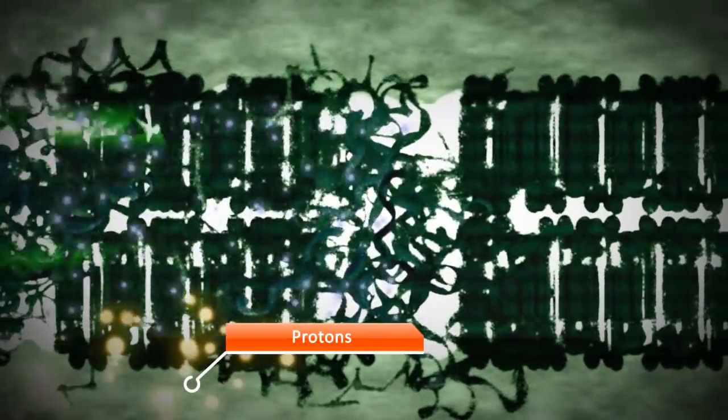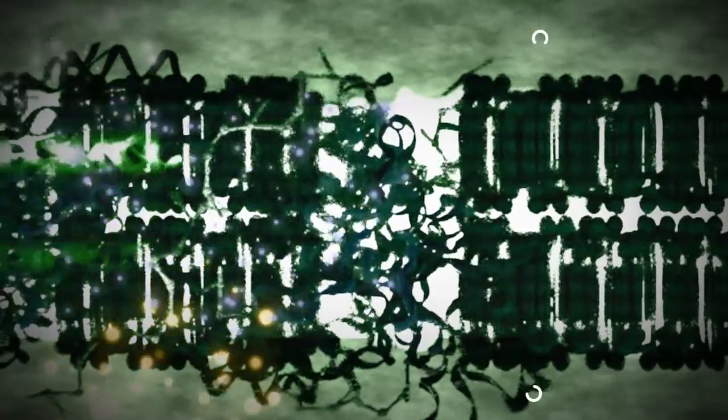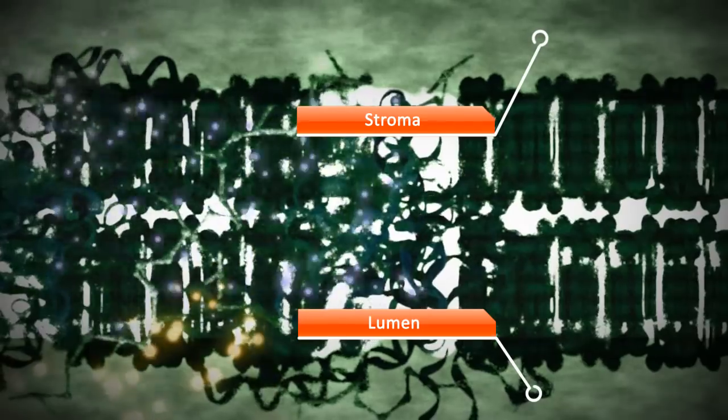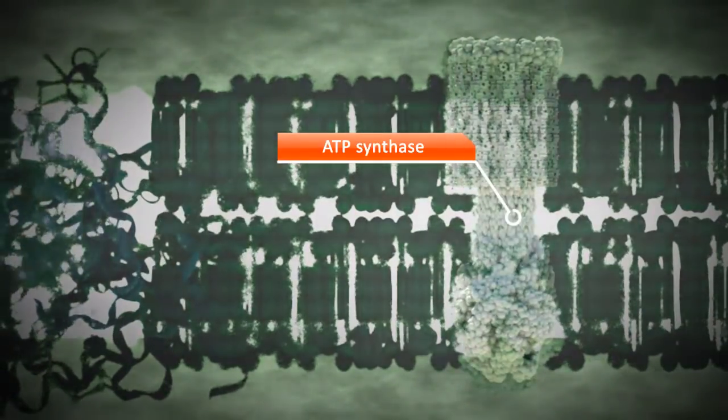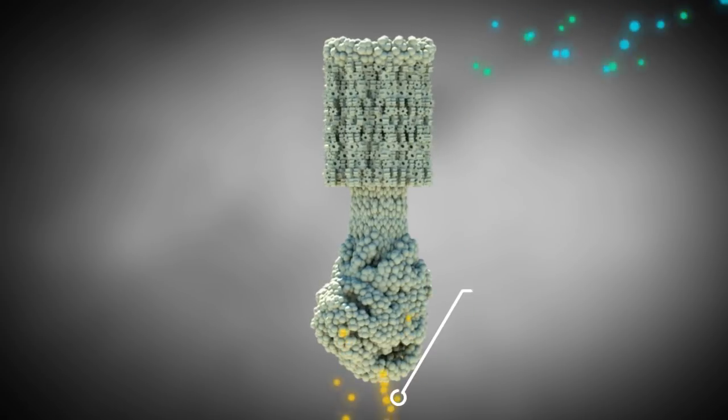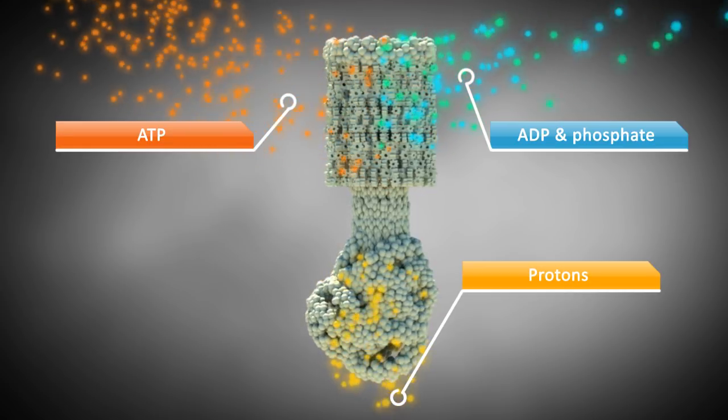The electrons are transported to the PS1 via an electron transfer chain. In the course of this electron transport, protons are being created that get into the lumen. This will result in a proton gradient between the lumen and the stroma, generating a force called proton motive force. Proton motive force drives ATP synthase that produces ATP from ADP and a phosphate group. This process is called oxidative phosphorylation.